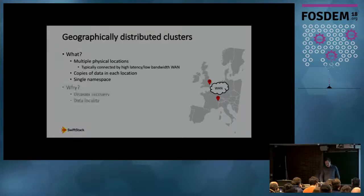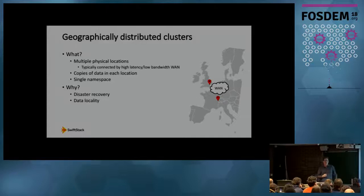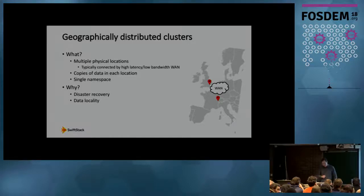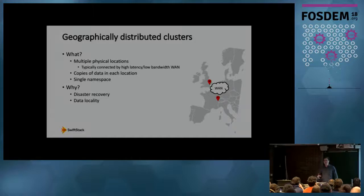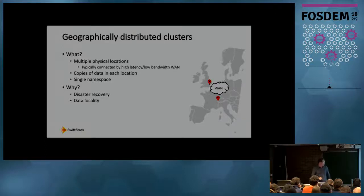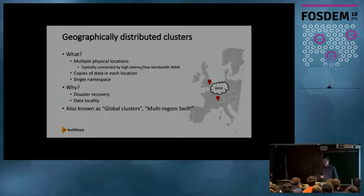Why would you want to do this? The first reason is for increased data durability and disaster recovery. If some catastrophic event caused you to lose an entire data center, you'd still have copies of your data available in another physical location. It's also useful for achieving data locality — if users access the same data sets in multiple geographic regions, a distributed cluster means copies of data are located close to each user, enabling low-latency reads. These clusters are also referred to as global clusters or multi-region Swift.